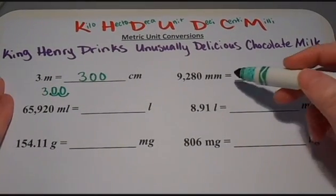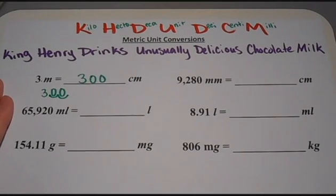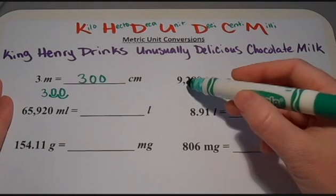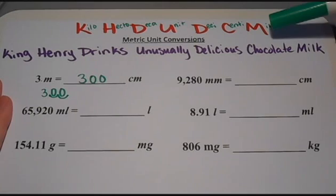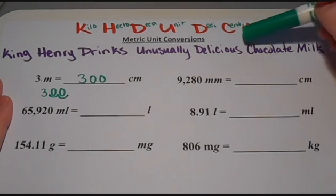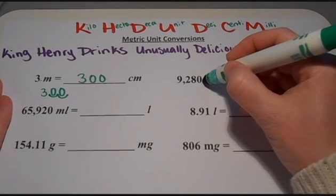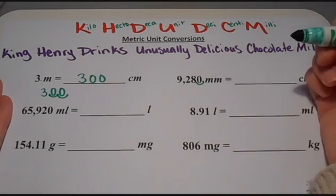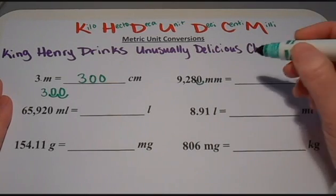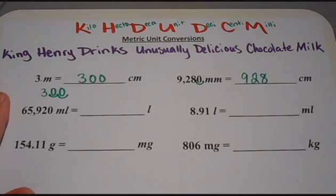It works the same if you're going from a smaller unit over to the larger unit as well. I've got 9,280 millimeters and I need to convert that to centimeters. I start with my milli, count over one space to the left to my centi, so I move the decimal one space to the left, giving me 928 centimeters.